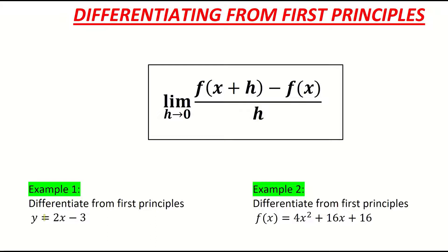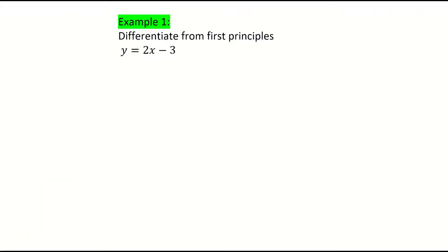Just notice that both functions are called different names. The first one is y equals, and the second one is f of x equals. They basically just mean the same thing — they're just giving the functions names. So for example one, differentiate from first principles y equals 2x minus 3.